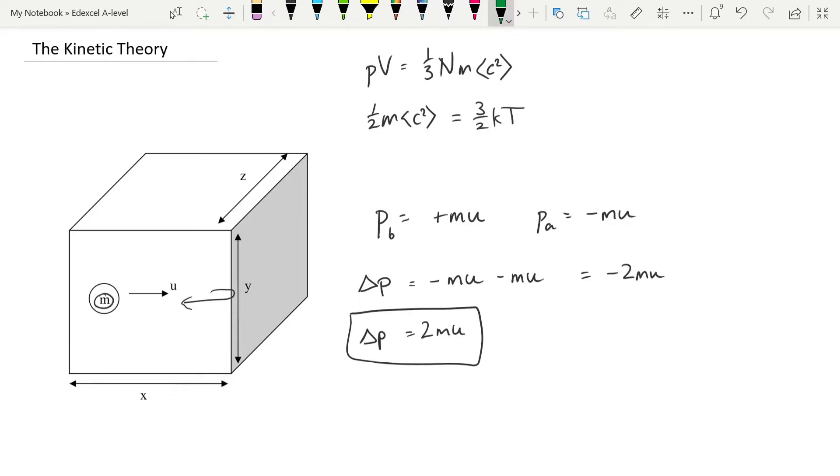Now we're going to do a little side calculation here. The distance that the particle travels between collisions, as it moves from the extreme left over to the shaded face and back again, the distance that it travels in that is going to be 2 times x. Therefore the time between collisions is going to be our distance divided by our speed, which we've already said is u, and so 2x over u is time between collisions.